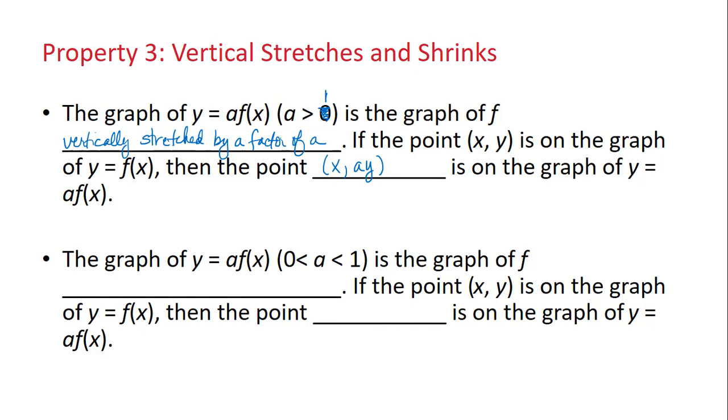Now if the value of a is between 0 and 1, then the graph of f is vertically shrunk by a factor of a. So if the point (x, y) is on the graph of y equals f(x), then the point (x, ay) is on the graph of y equals af(x).